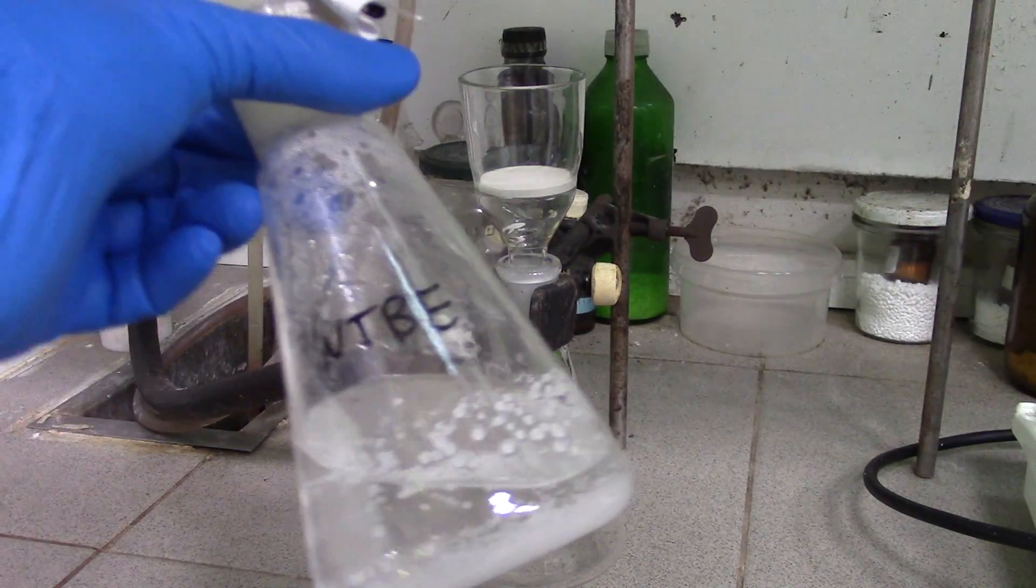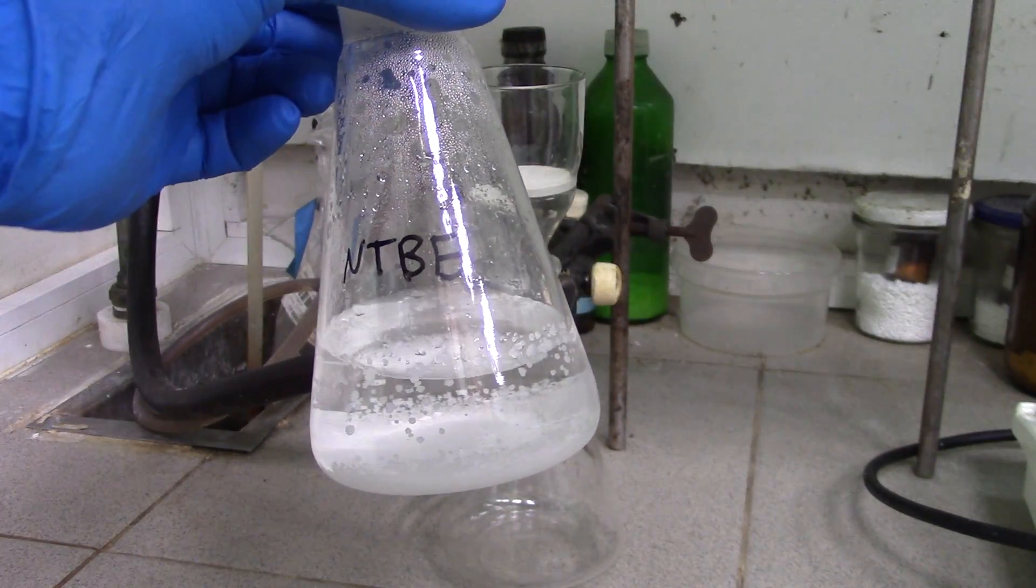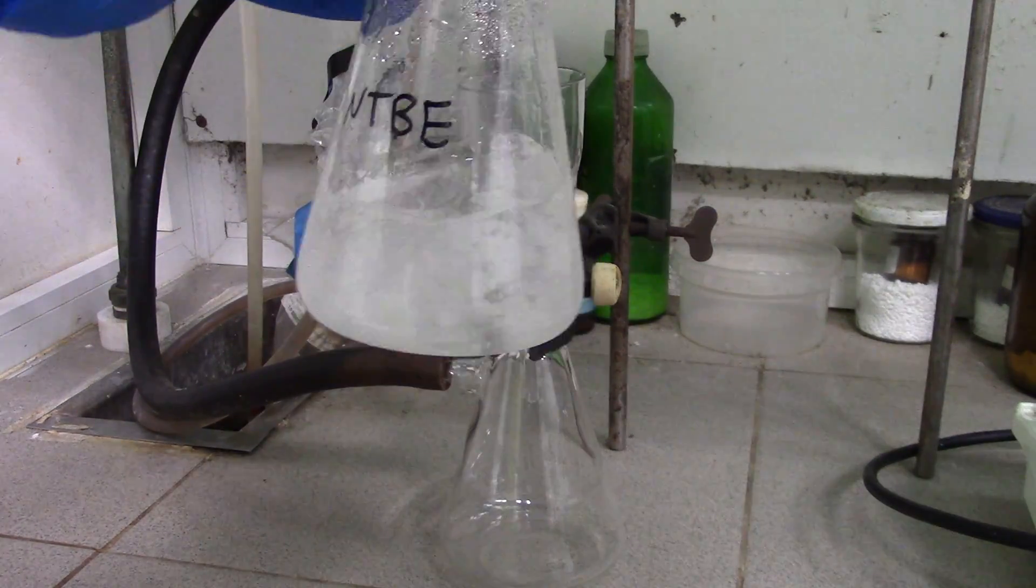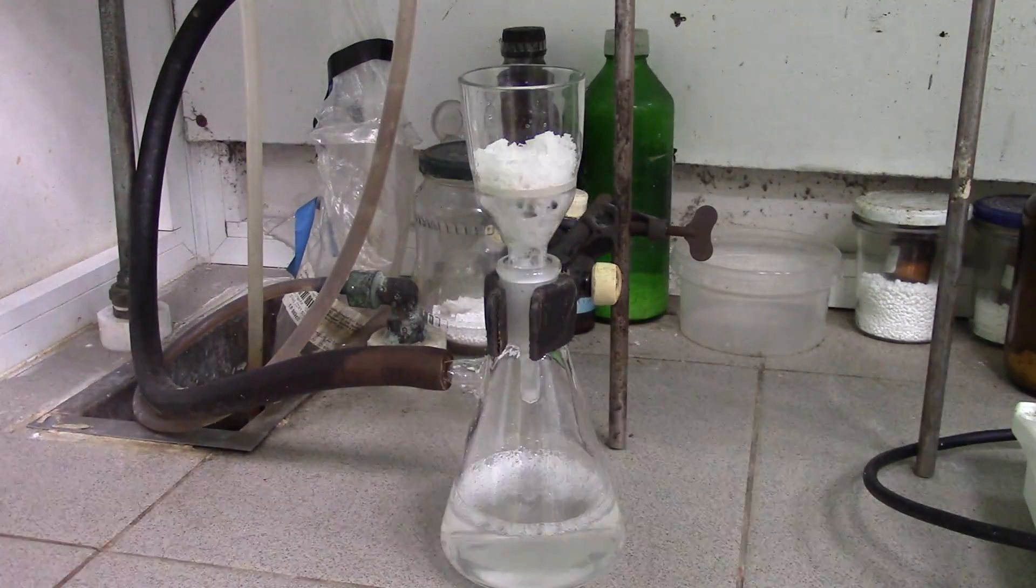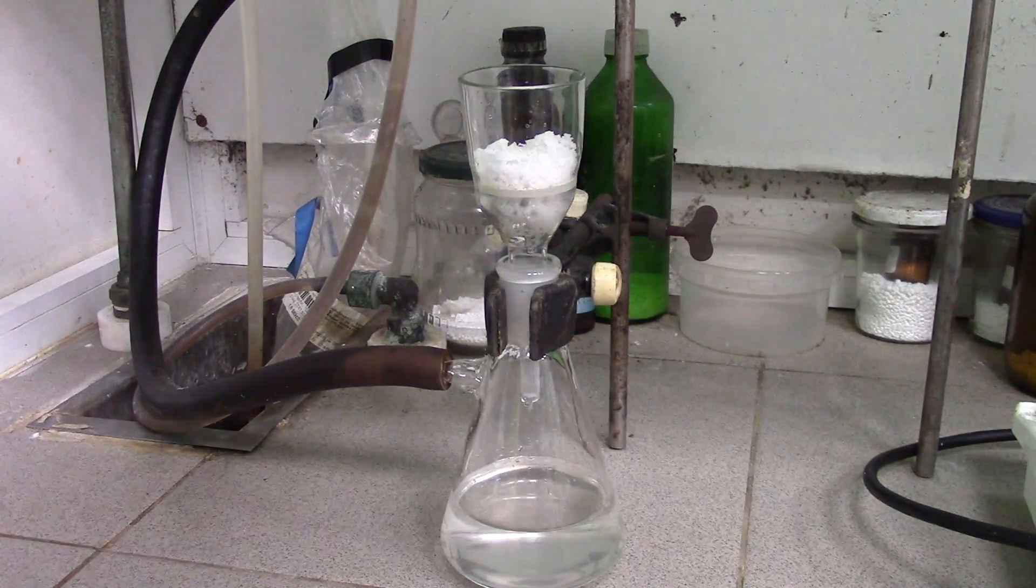On the next day, fine crystals of sodium tetraborate are crystallized out. Now just filter it off on a glass filter and wash a couple of times with isopropanol.